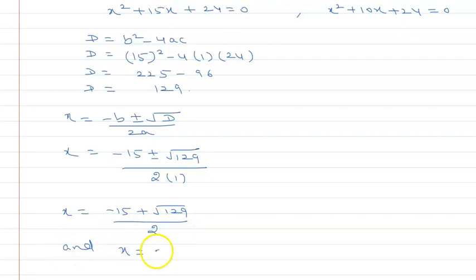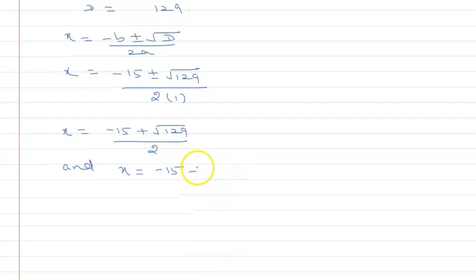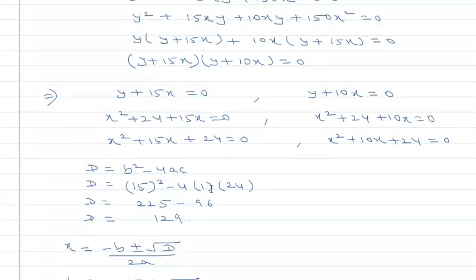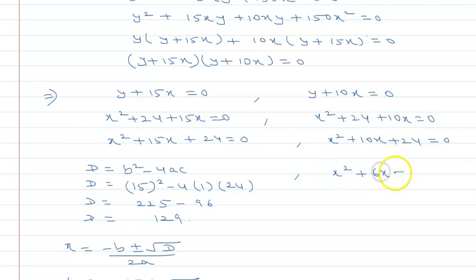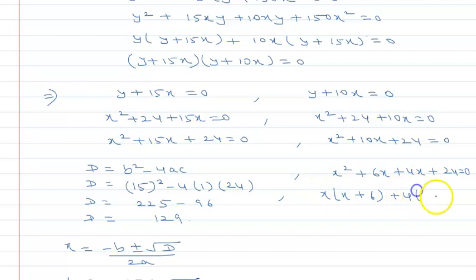So x equals negative 15 plus or minus square root of 129, all over 2. For the second equation x squared plus 10x plus 24 equals zero, I can factorize it: 1 times 24 is 24 and we break 10 as 6 plus 4, so x squared plus 6x plus 4x plus 24, giving x(x plus 6) plus 4(x plus 6) equals zero, so (x plus 6)(x plus 4) equals zero.